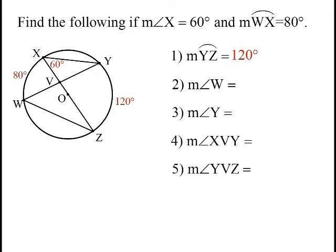Now, the measure of angle W right here intercepts that same arc YZ, so it's got to be half of 120 - it's going to be 60. Let's see, Y intercepts this arc XW, so it would be half of 80, which is 40.